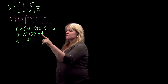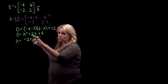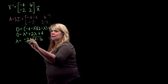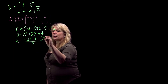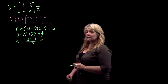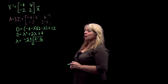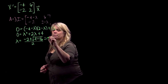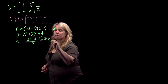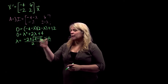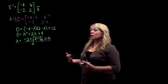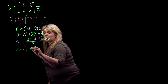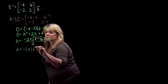So negative 2 plus or minus the square root of b squared — 2 squared is 4 — minus 4ac, so minus 16, all over 2a. The square root of 4 minus 16 gives the imaginary numbers. That's the square root of negative 12, which is 2i√3. Simplifying with the denominator of 2, I get lambda equals negative 1 plus or minus i times √3.